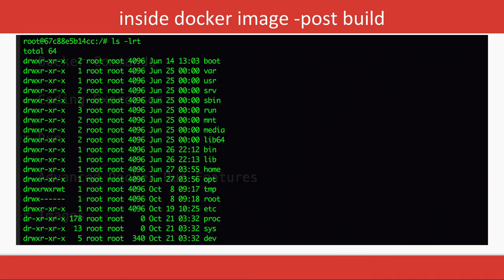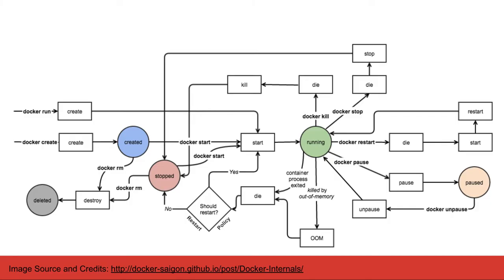Now let's look at the lifecycle of a Docker container. `docker run` creates the container, and `docker start` starts it so the container is running. You can then do `docker restart`, `docker pause`, and so on. This covers both the container level and the Docker daemon process level — starting, restarting, or stopping the container.